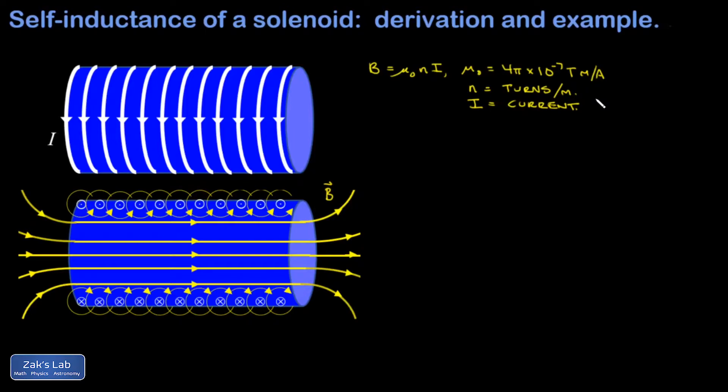Conversely, once current is running in a solenoid, if we suddenly switch off the power source, an EMF will be induced that tries to maintain the current flowing in the same direction, because it's fighting any change of flux through the coils. This resistance to changes in current is quantified as the self-inductance of the coil.